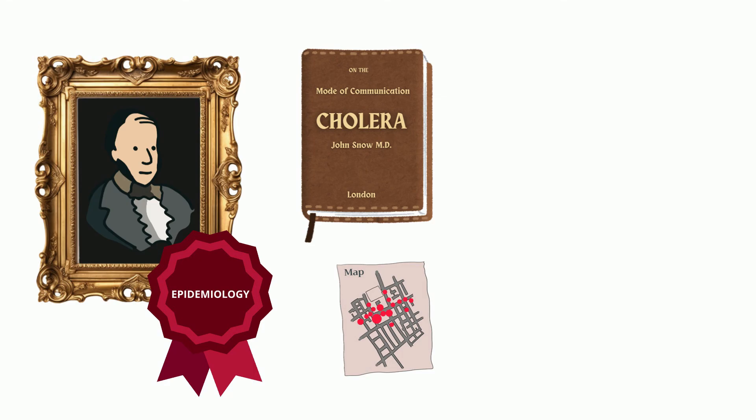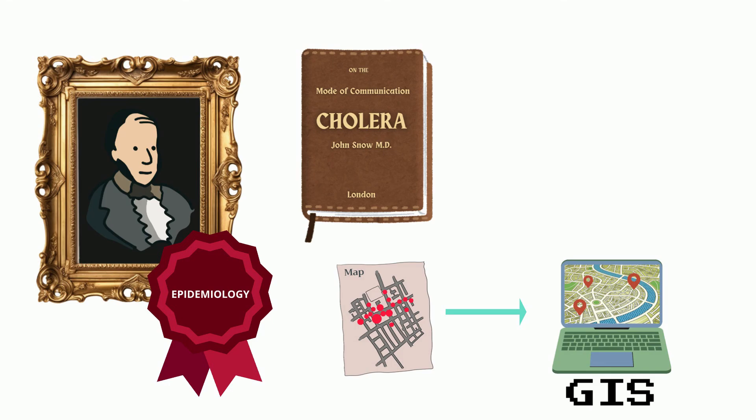With significant advancements in modern geographic information systems, mapping continues to be a powerful epidemiological tool. And that's the story of John Snow and his battle with cholera.